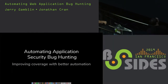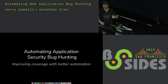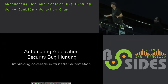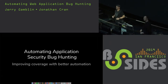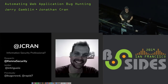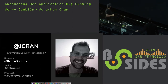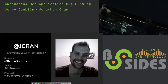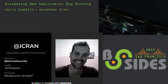Automating application security bug hunting. My name is Jonathan. I am an information security professional with a question mark, and I am at Kenneth Security. I have a little project we're going to talk about today called Intrigue. Previously I was at Bugcrowd and Rapid7.